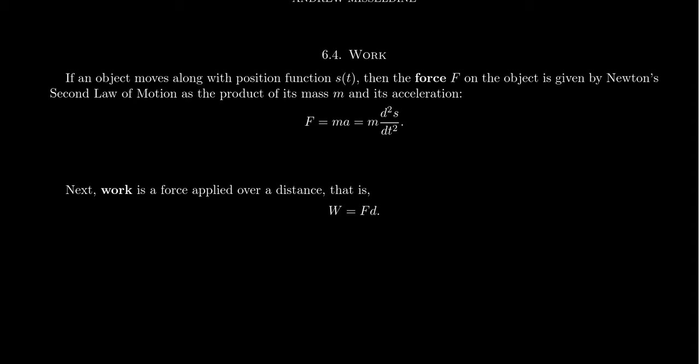So imagine that we have an object whose location position is given by the function s(t), which we see right here. We've used this before to refer to a position function. So given a position function, recall that the force of an object, which we typically denote with a capital F, the force of an object follows the rules of Newton's second law of motion, which tells us that the force is equal to the mass of the object times the acceleration that it begins to have.